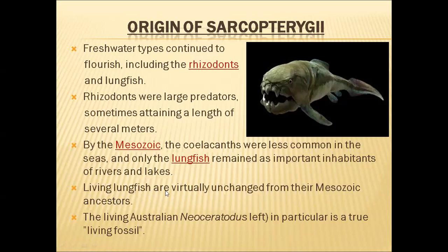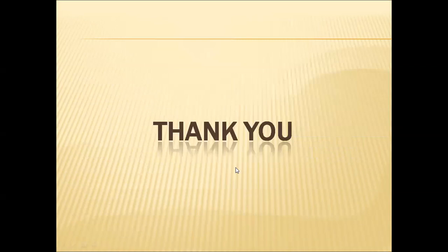Later living lungfishes are virtually unchanged from their Mesozoic ancestors. We can consider that living lungfishes are living fossils. The living Coelacanth, Neoceratodus, is truly a living fossil because it has not changed since the Mesozoic. This is about the origin and salient features of Sarcopterygii fishes.